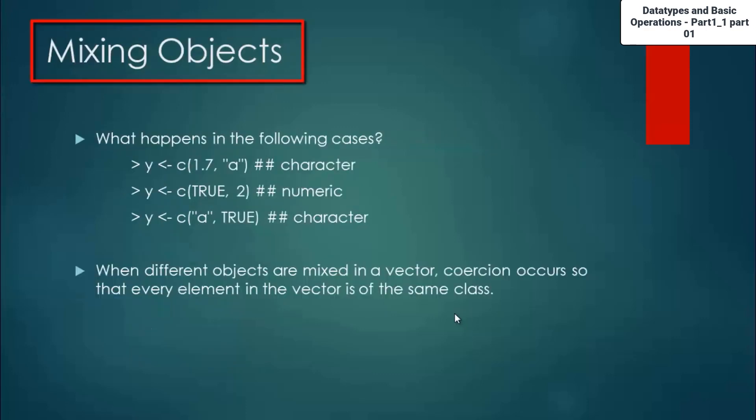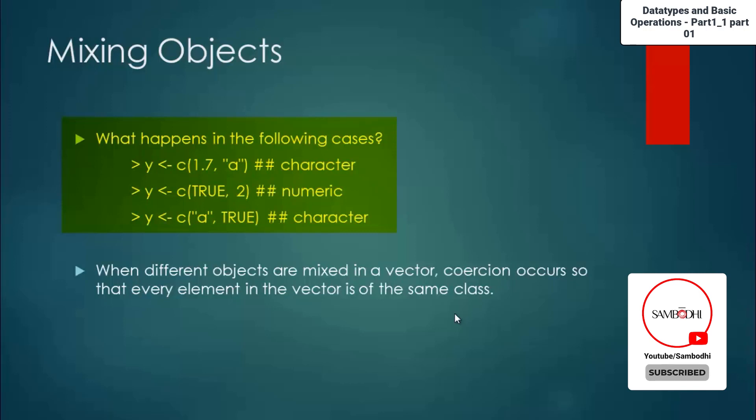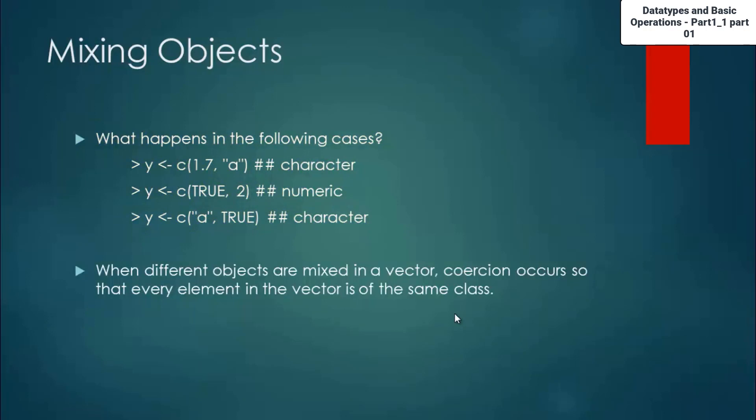Now we will move on to the next part of mixing objects. Here I am trying to create a character vector, but instead I have a numeric value also in the same vector. What happens in this? In the first example, I have shown you y is assigned a vector with values 1.7 and a, a character a. So there are two sets of objects being added to the same vector. You can see that in the next case also, a logical value is added along with a numeric character. And the next thing, you can see a character being added with a logical value. So what happens here is that in the first case, the vector itself will get converted into a character vector. In the next case, it will be a numeric vector. And the next case, it will be a character vector again. So what exactly happens here is a term used in R programming called coercion, which happens so that even if you add a vector with multiple classes of objects, it will convert to the same class of objects.